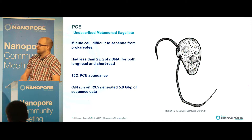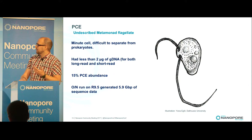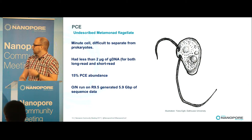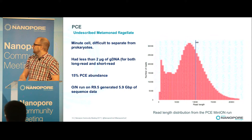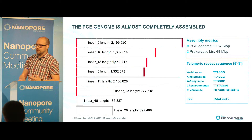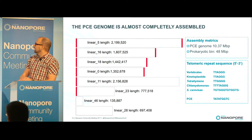The second organism is called PCE — an acronym for Prince Edward Island eelgrass, where it was isolated. It is an undescribed metamonad flagellate with no formal description, very minute in cell size, and very difficult to separate from prokaryotes. We obtained only about two micrograms of DNA in total. Short-read sequencing showed 15% eukaryotic abundance, but we were able to generate close to six gigabytes of data. We assembled the genome in eight contigs, four of which were telomere-bounded on both ends and two more had telomeres on single ends. The telomeric repeat was slightly divergent from those in other eukaryotes. The prokaryotic bin was also well assembled, at 48 megabases.